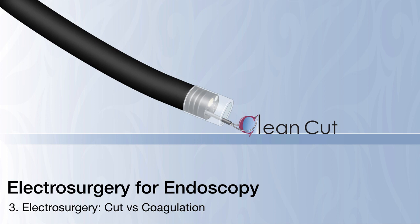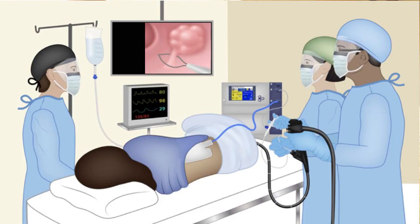Let us talk about the principles of electrosurgery in terms of the cut and the coagulation effect. Here we are ready to remove a large pedunculated polyp. However, we could use either a pure coagulation or a cut with a coagulation effect.